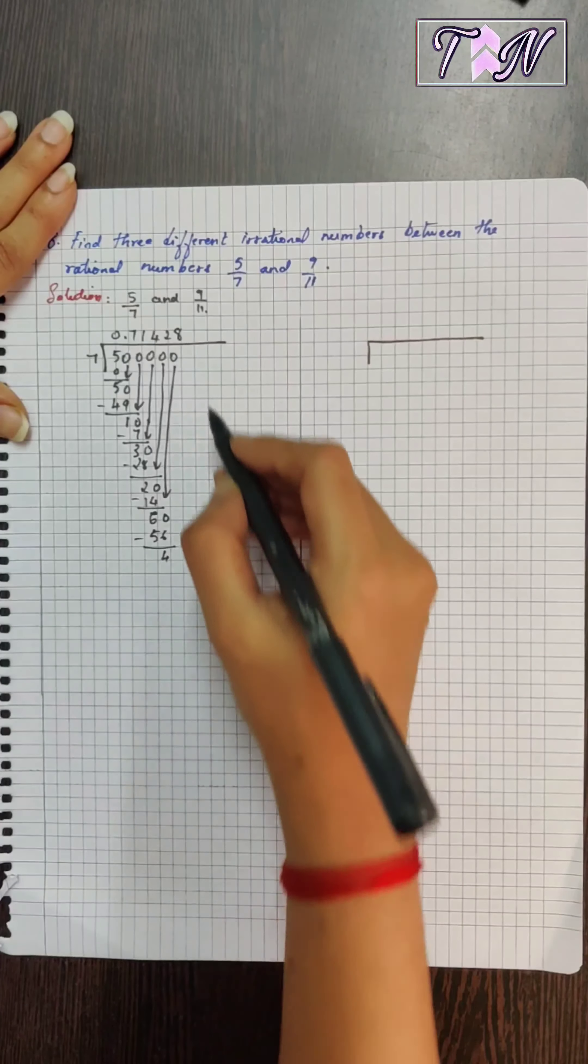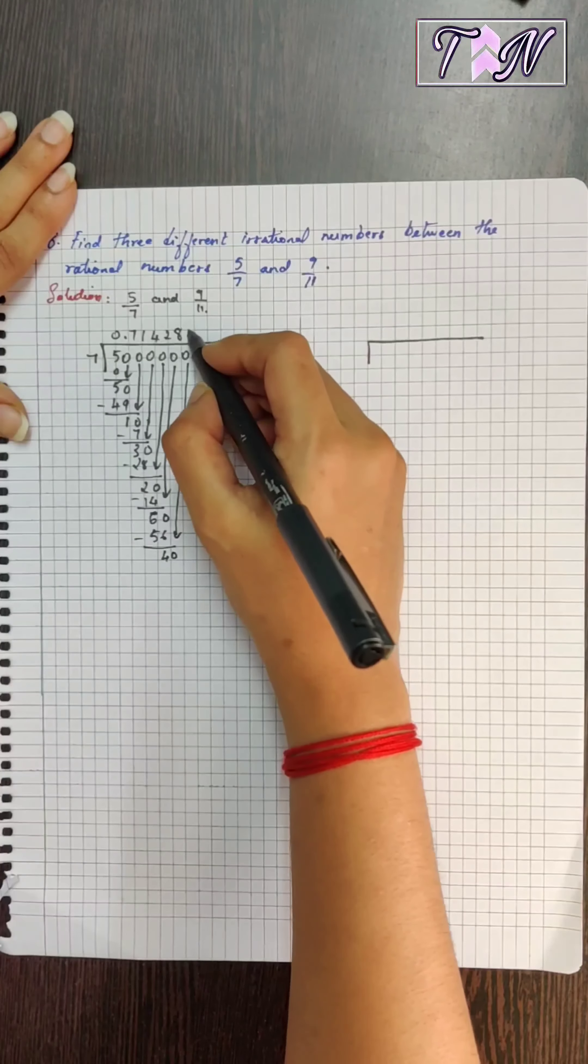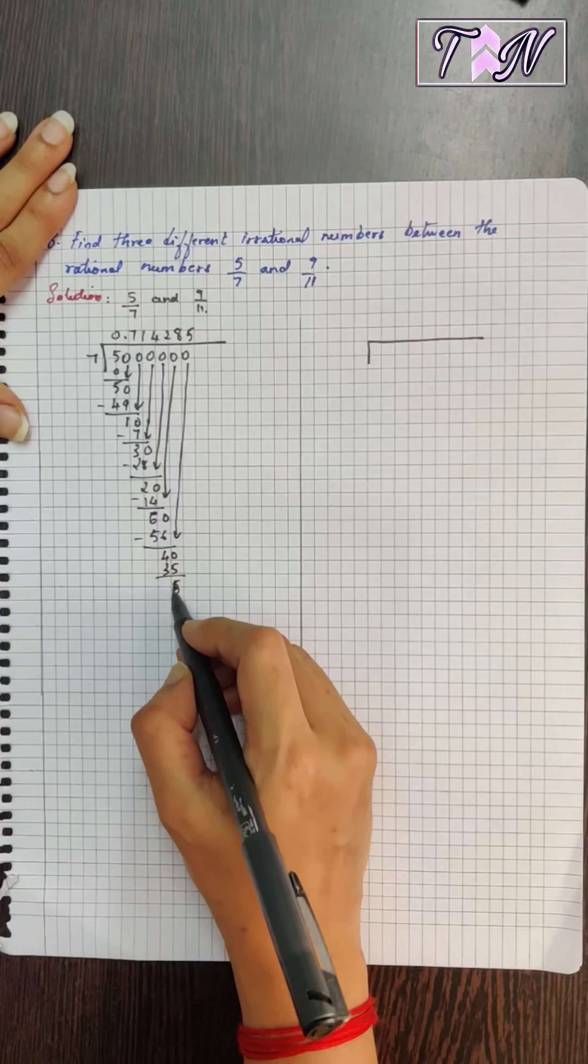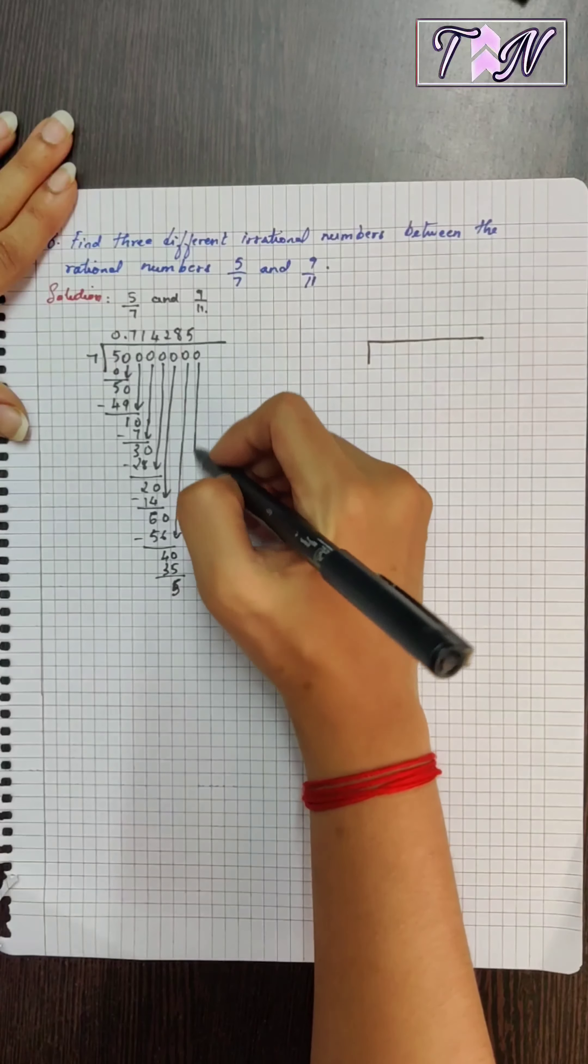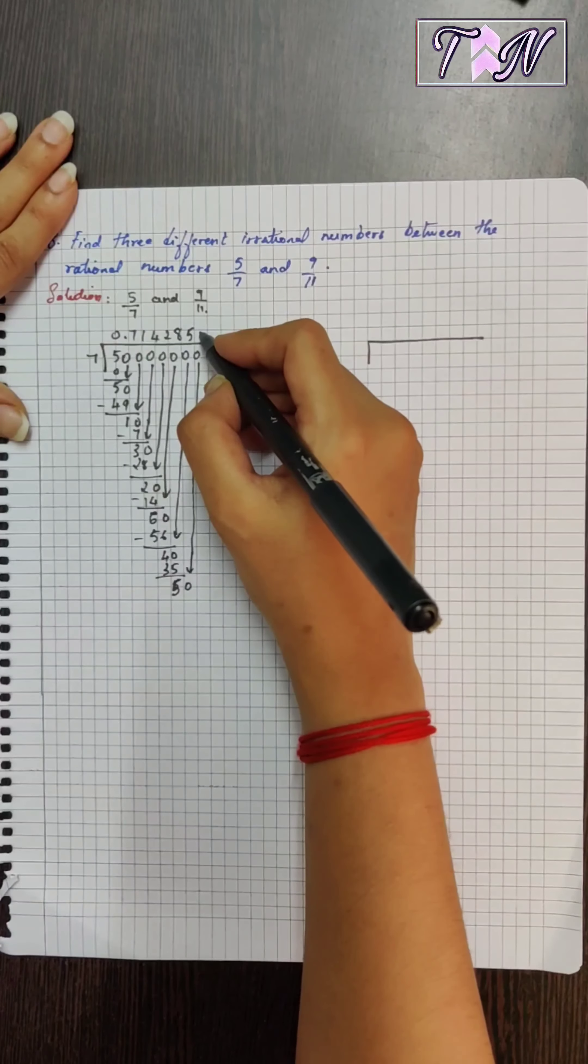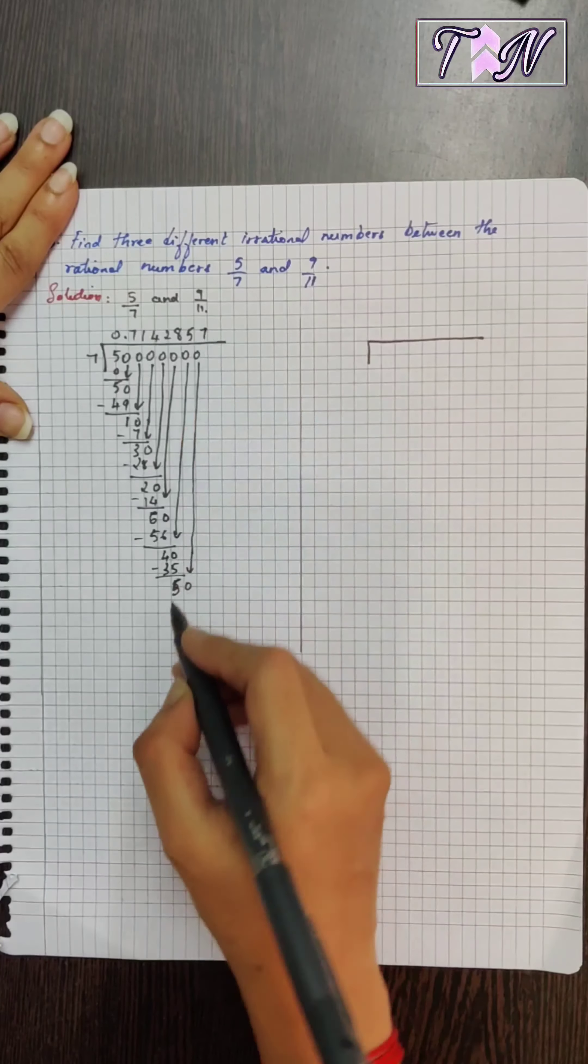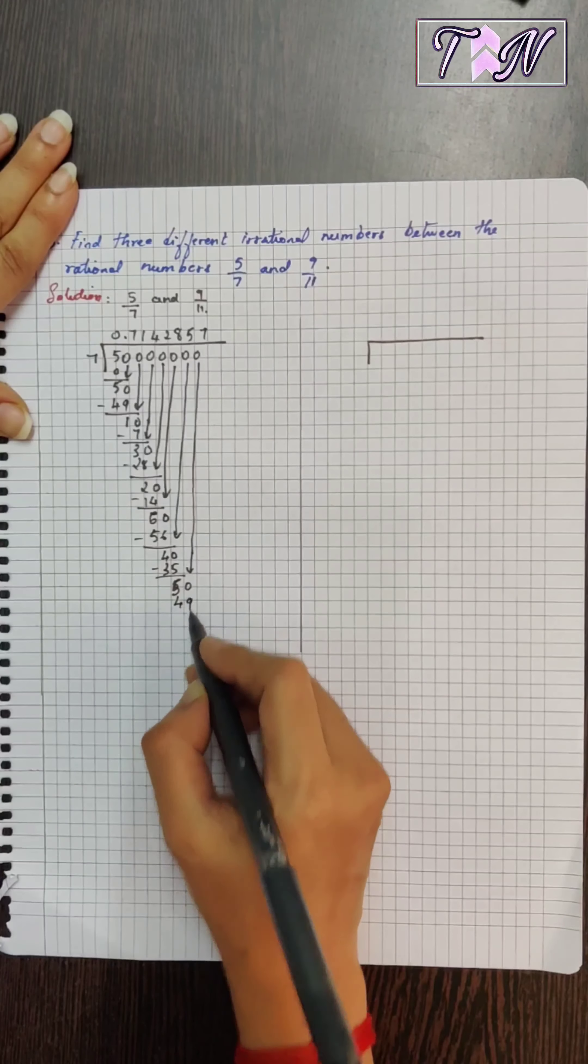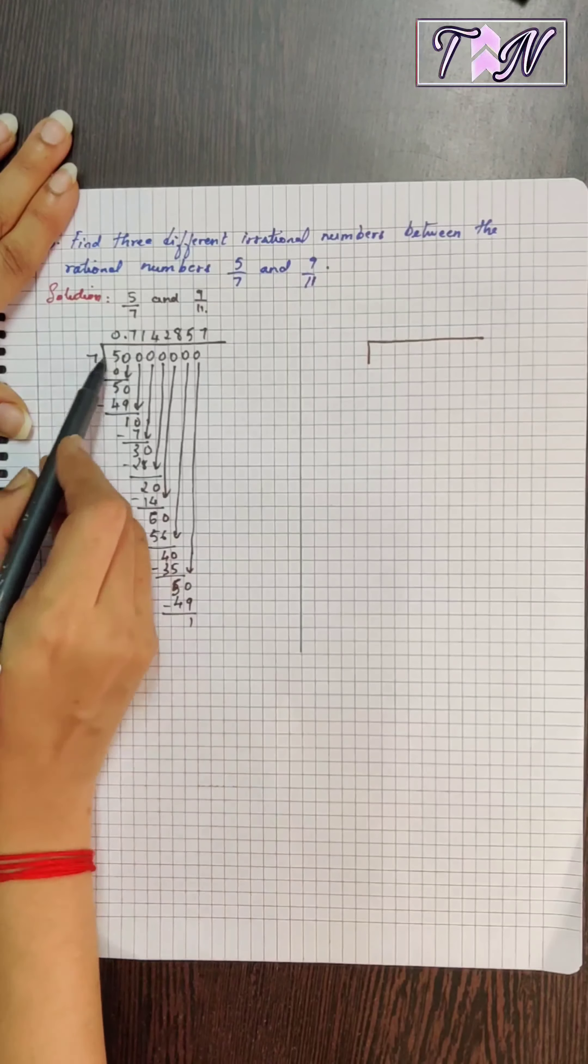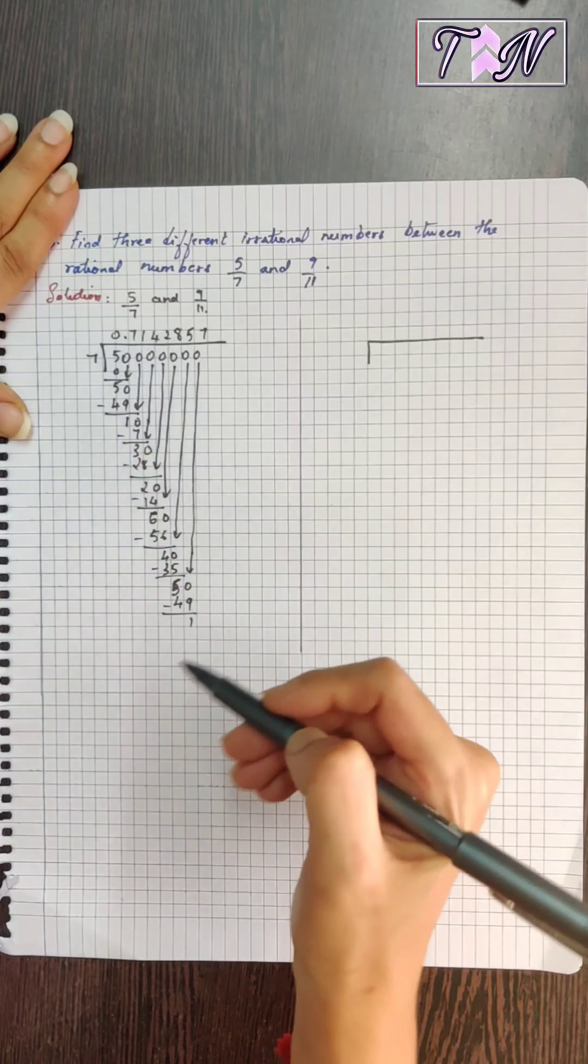Then eights are 56, bring another zero down. Fives are 35, bring another zero down. Then seven sevens are 49. So we can see that it started repeating. So 50, 50 and you can see 7 and 7. So this block will go on repeating.